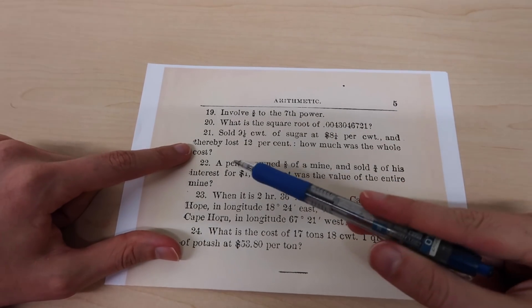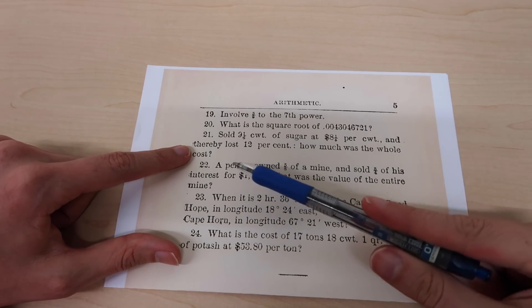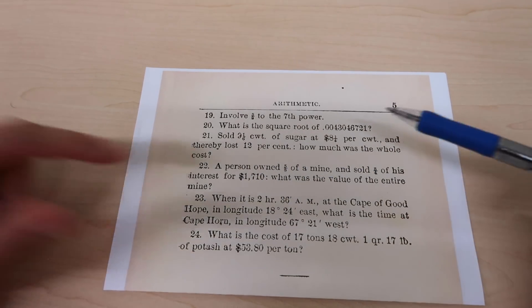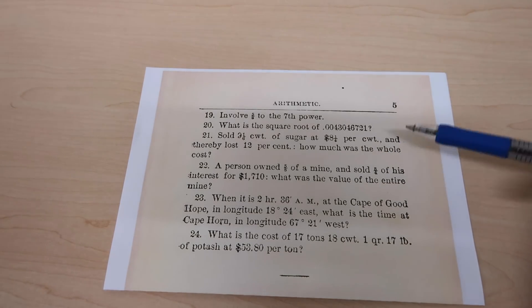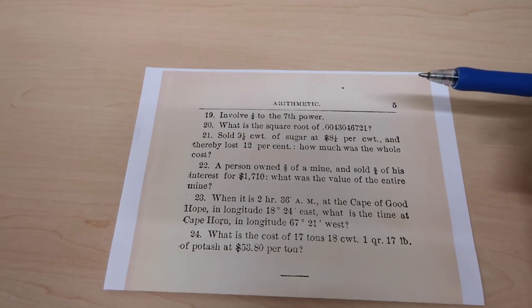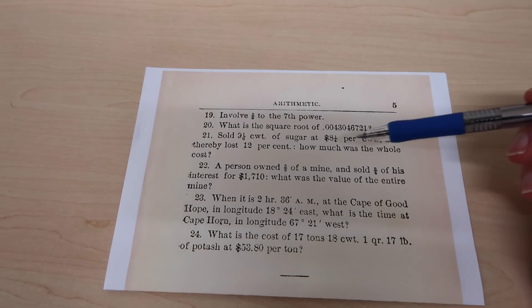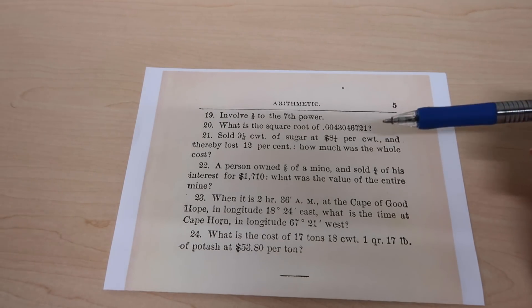Number 21: we have an amount of sugar at a certain price. It looks like it's lost 12% in price, so how much was the whole cost? I guess in essence it's the same as what we still do these days. If you want to find out how much it was worth before it depreciated, you would take the total amount now, divide it by 0.88, and that would tell you how much it was worth to start with.